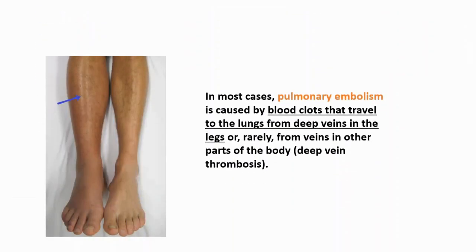In most cases, pulmonary embolism is caused by blood clots that travel to the lungs from deep veins in the legs, or from veins in other parts of the body. That is deep vein thrombosis.